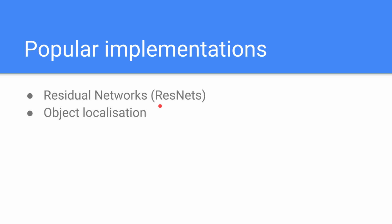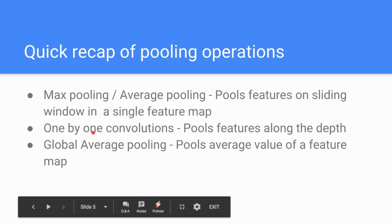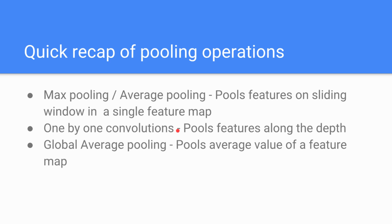Before I end this lecture, here's a quick recap of the pooling operations discussed earlier. First, max pooling or average pooling: this operation uses a sliding window on a single feature map, and based on the dimensions of the sliding window and whether you are using max pooling or average pooling, your output will depend accordingly. The second is 1×1 convolutions, which perform pooling along the depth direction, reducing the depth dimensions.